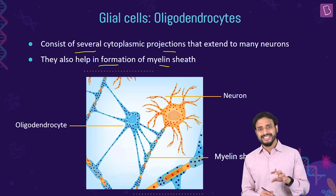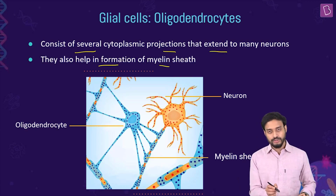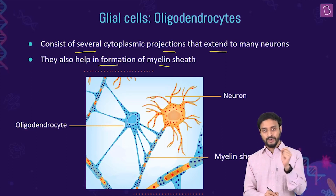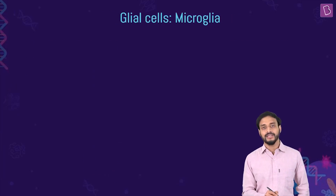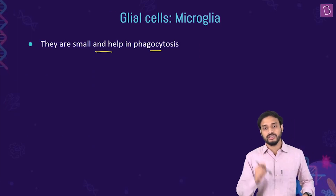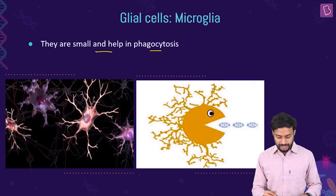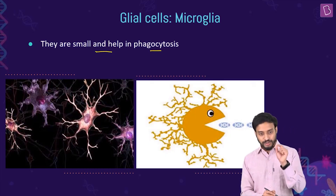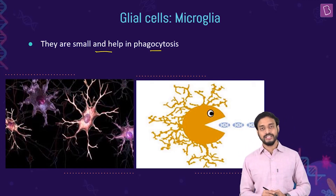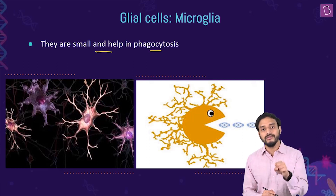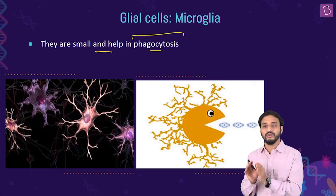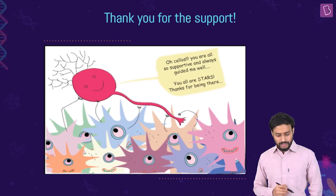Oligodendrocytes have fewer and shorter cellular processes, but their projections extend to many neurons and help in myelin sheath formation. Microglia are the smallest neuroglial cells. They can engulf and destroy microbes — this process is called phagocytosis.